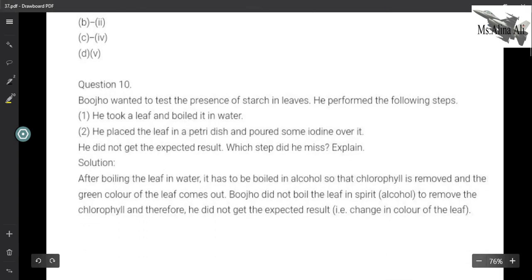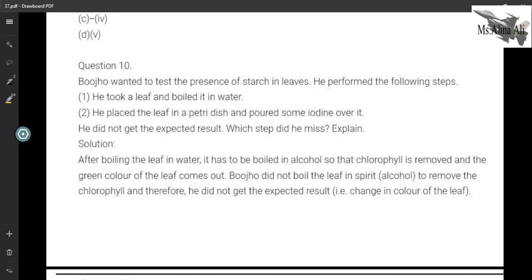Next question is Bhujo wanted to test the presence of starch in leaves. He performed the following steps: He took a leaf and boiled it in water, then he placed the leaf in a petri dish and poured some iodine over it. He did not get the expected result. What step did he miss? Now if you can see here, what did he do? He boiled it in water.